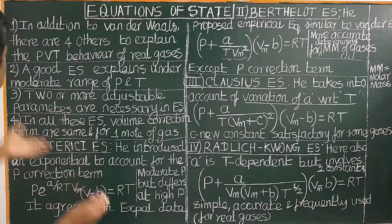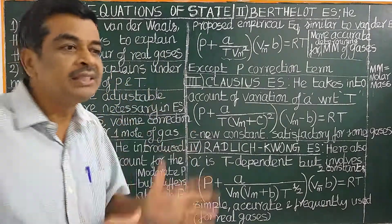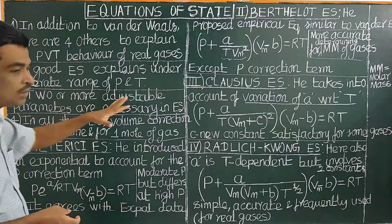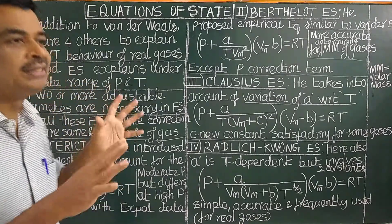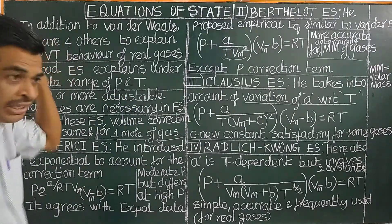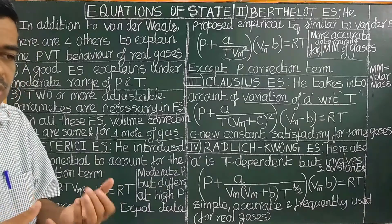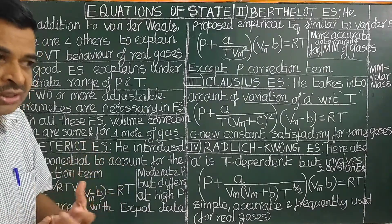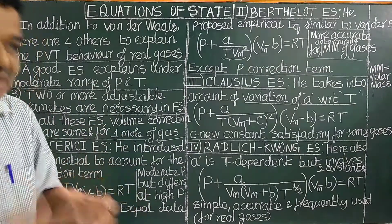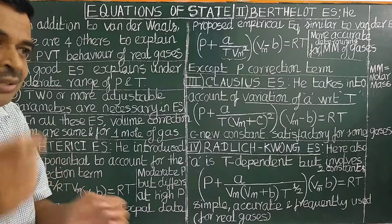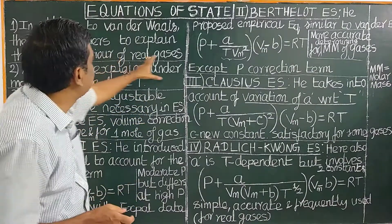Which equation of state is good? A good equation of state explains the real gas behavior under moderate pressure and temperature. In all equations of state, there are two or more adjustable parameters. For example, in Van der Waals' gas equation, there are two constants, A and B, which are adjustable parameters whose values vary for different gases.